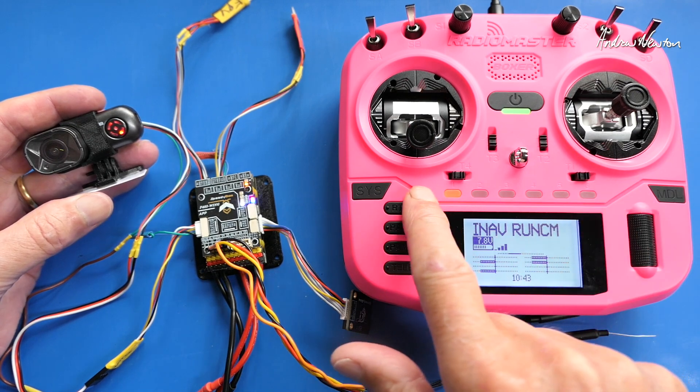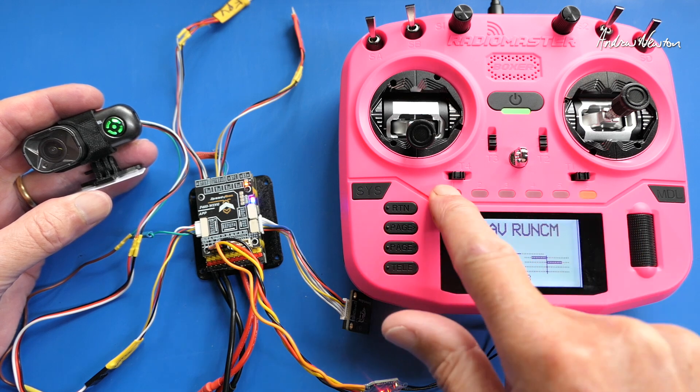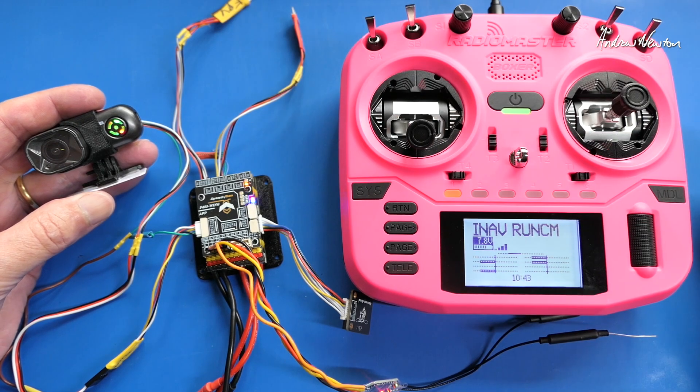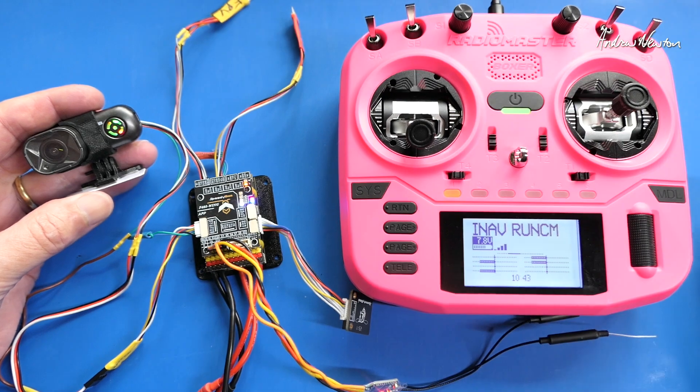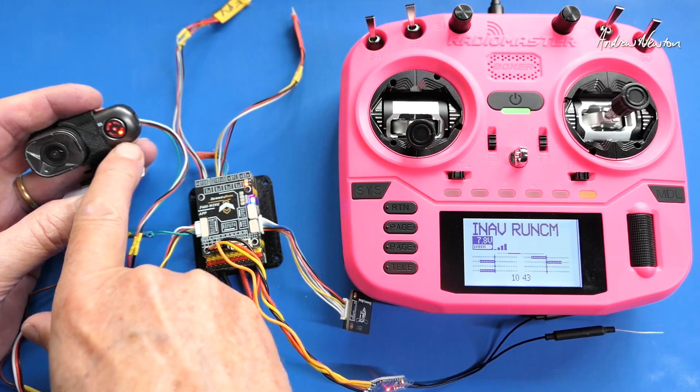And I've got channel 14 on the six position switch down here to change mode. So on and off changes it to still photo mode, and that is now doing timelapse photos. Turn it off again and turn it back to video.